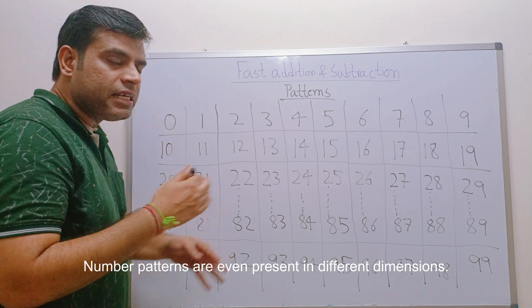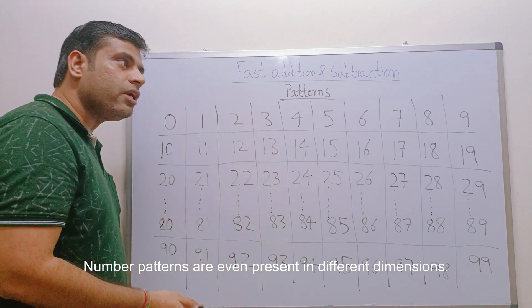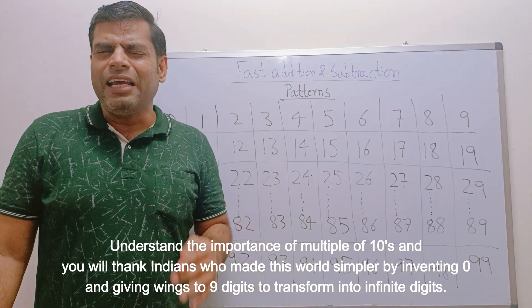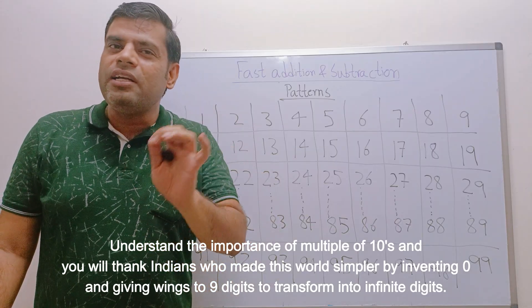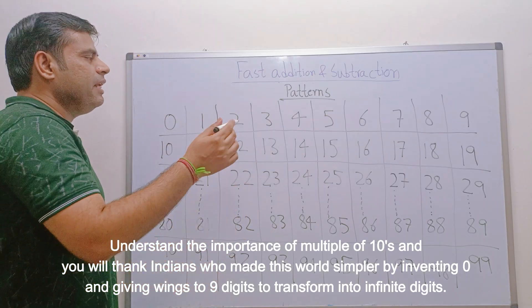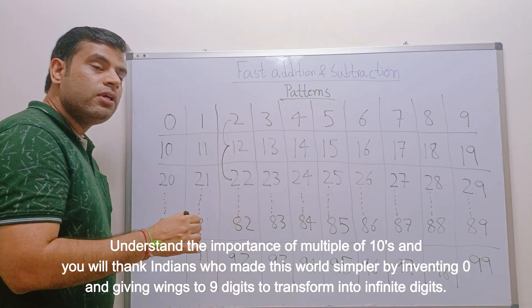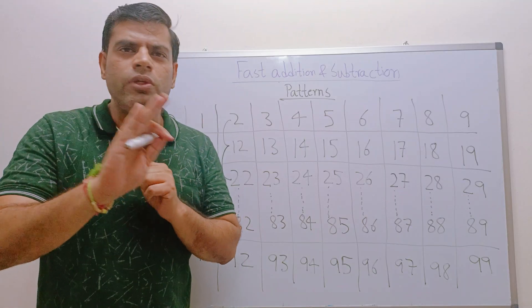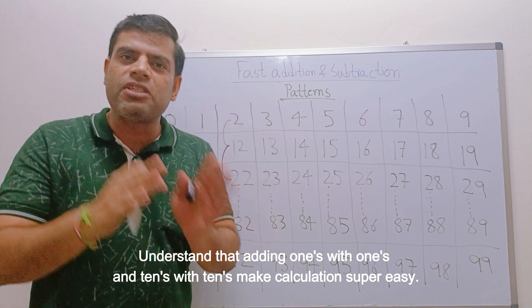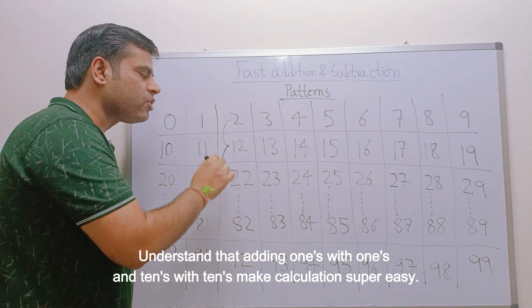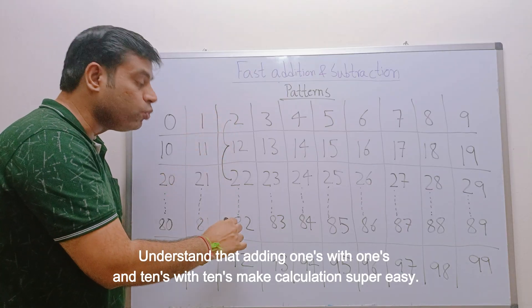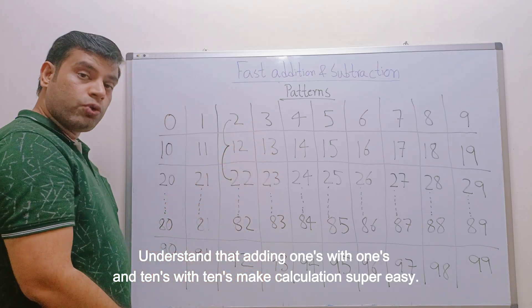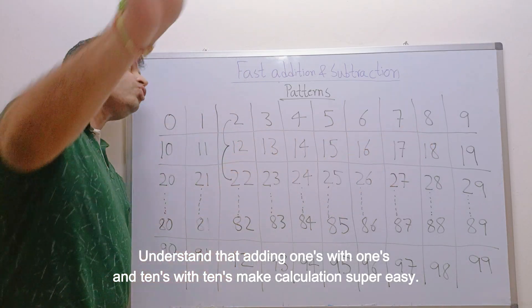In our third lesson on fast addition and subtraction, there will be a technique where you feel the importance of multiples of tens, hundreds, or thousands. It's very easy to add: 10 + 10 = 20, 20 + 10 = 30. Same way, 2 + 10 = 12, 12 + 10 = 22. Many kids struggle with 2 + 20, but there's no need to think: 2 + 20 = 22, 2 + 40 = 42, 2 + 80 = 82, 2 + 90 = 92, 12 + 80 = 92. The pattern exists not only horizontally but also vertically and diagonally.